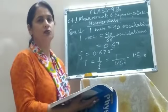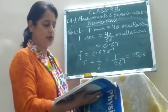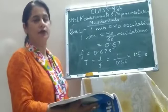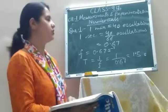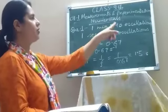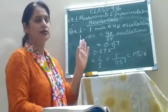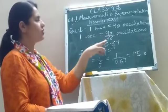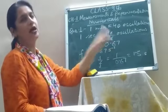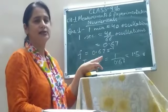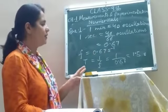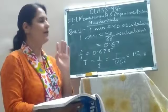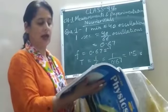Let us do the numericals of exercise 1C. Question 1: A simple pendulum completes 40 oscillations in 1 minute. Find the frequency and the time period. Since 1 minute is 60 seconds, in 1 second the pendulum completes 40/60 = 0.67 oscillations. So the frequency is 0.67 per second. The time period is 1/F = 1/0.67, which is approximately 1.5 seconds.